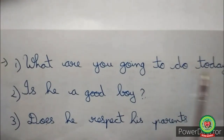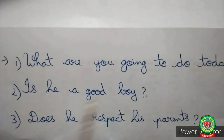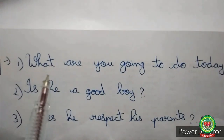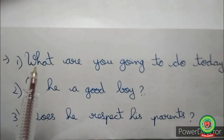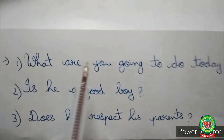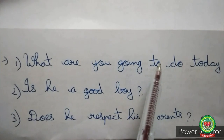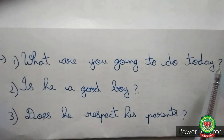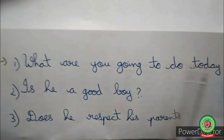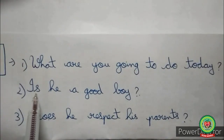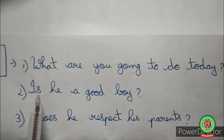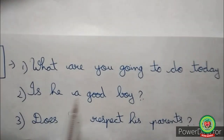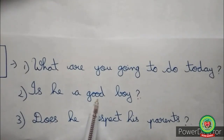Let us understand with the help of some examples: 'What are you going to do today?', 'Is he a good boy?', 'Does he respect his parents?' In the first sentence, what is the question word and the sentence begins with it — a question is being asked, so it is an interrogative sentence. Similarly, the second sentence begins with the helping verb is and ends with a question mark — a question is being asked, so it is also an interrogative sentence.